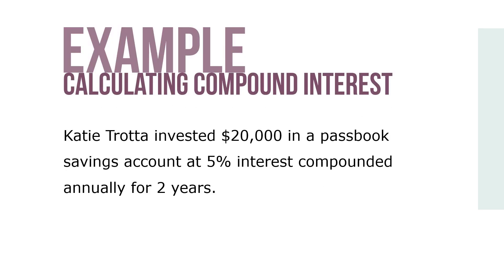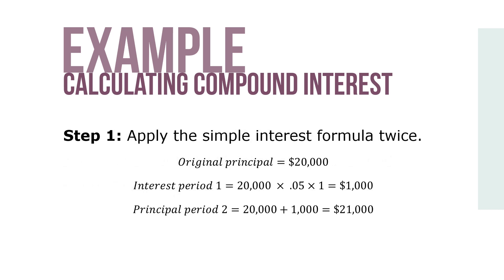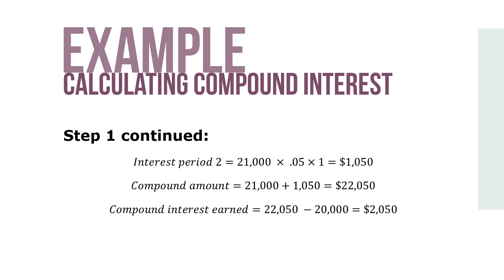Here's an example. Katie Tarada invested $20,000 in a passbook savings account at 5% interest compounded annually for two years. Step 1: Apply the simple interest formula twice. The original principal is $20,000. Interest for period 1 is $20,000 × 0.05 × 1 = $1,000. The principal for period 2 is $20,000 + $1,000 = $21,000. Interest for period 2 is $21,000 × 0.05 × 1 = $1,050. The compound amount is $21,000 + $1,050 = $22,050. The compound interest earned equals $22,050 − $20,000 = $2,050.